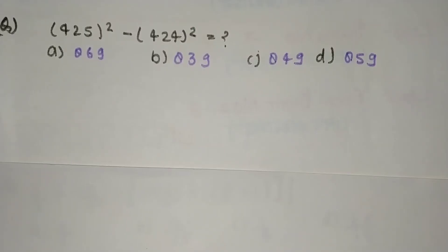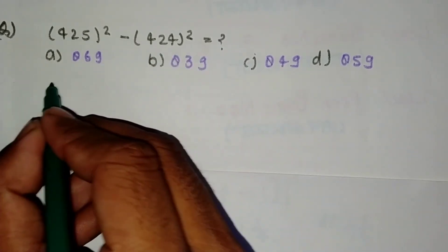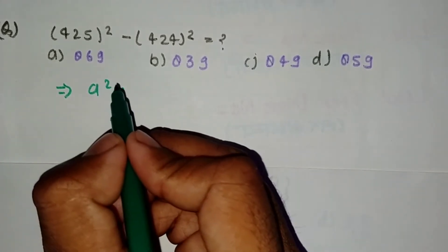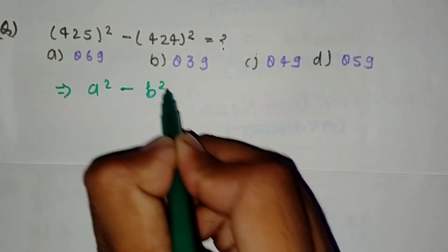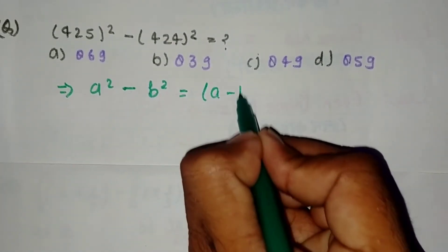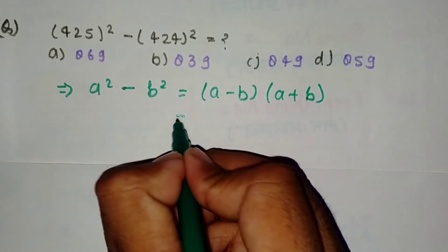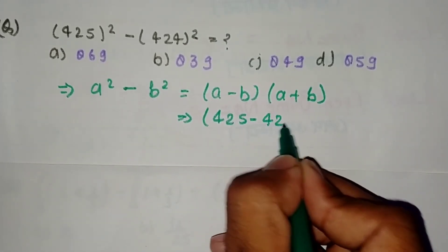Next question: (425)² minus (424)² equals how much? Let's see. Take 425 as a and 424 as b. So a² minus b² equals (a-b)(a+b). That gives us (425-424)...